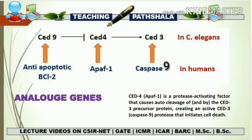In humans the same function is performed by different genes, but the function remains the same. The CED9 function is performed by BCL2 — they are analogous genes performing the same function in different organisms. The role of APAF1, which is a pro-apoptotic factor promoting apoptosis, is played by CED4 inside C. elegans. The role of Caspase 9 is played by CED3 in C. elegans. CED4 is a protease-activating factor that causes auto-cleavage of the CED3 precursor protein, creating active CED3 that initiates cell death, just as Caspase 9 does in the mitochondrial pathway.